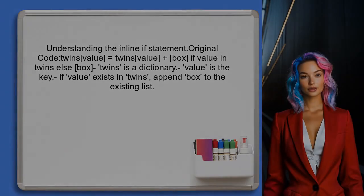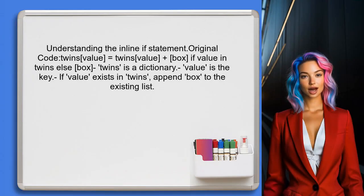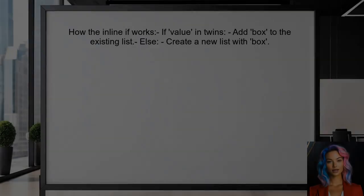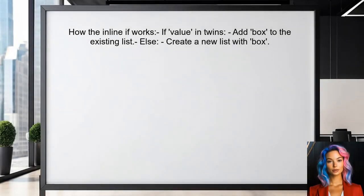To understand the inline if statement, let's break down the original line of code. The user has a dictionary called 'twins' and is trying to add a box to a list associated with a specific value. The inline if statement checks if the value is already in the twins dictionary. If it is, it adds the box to the existing list. If not, it creates a new list with the box.